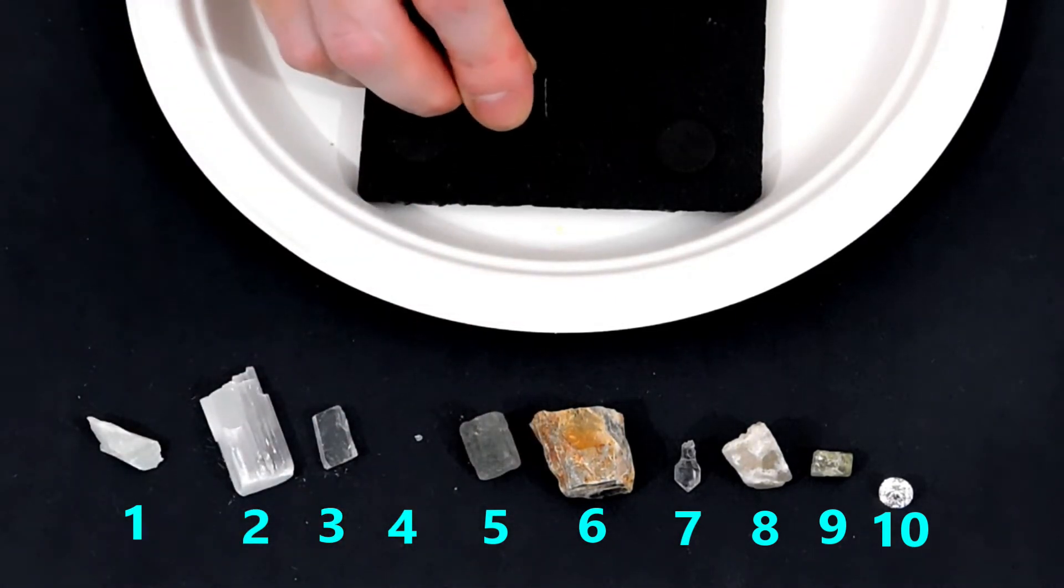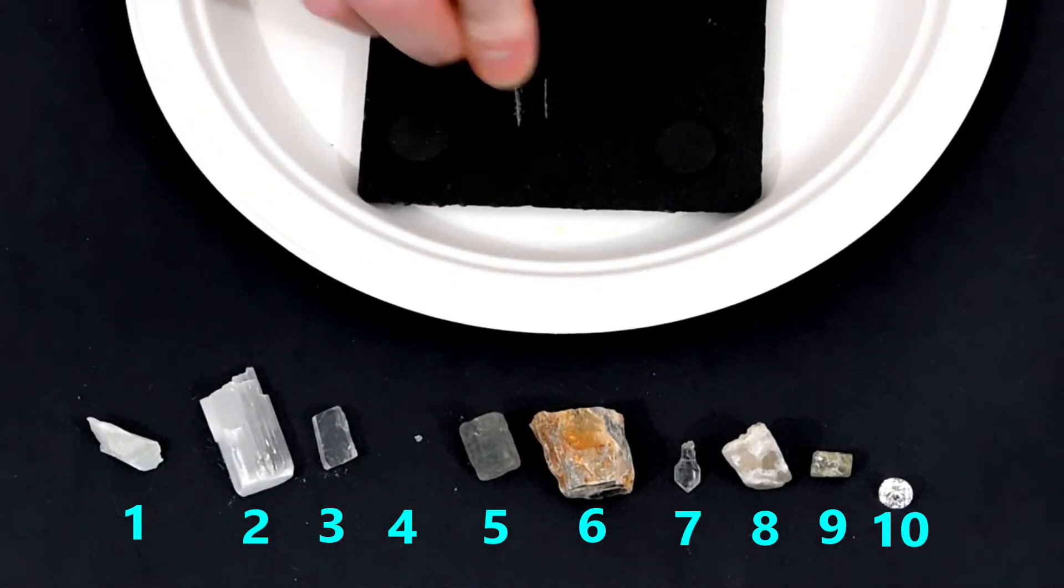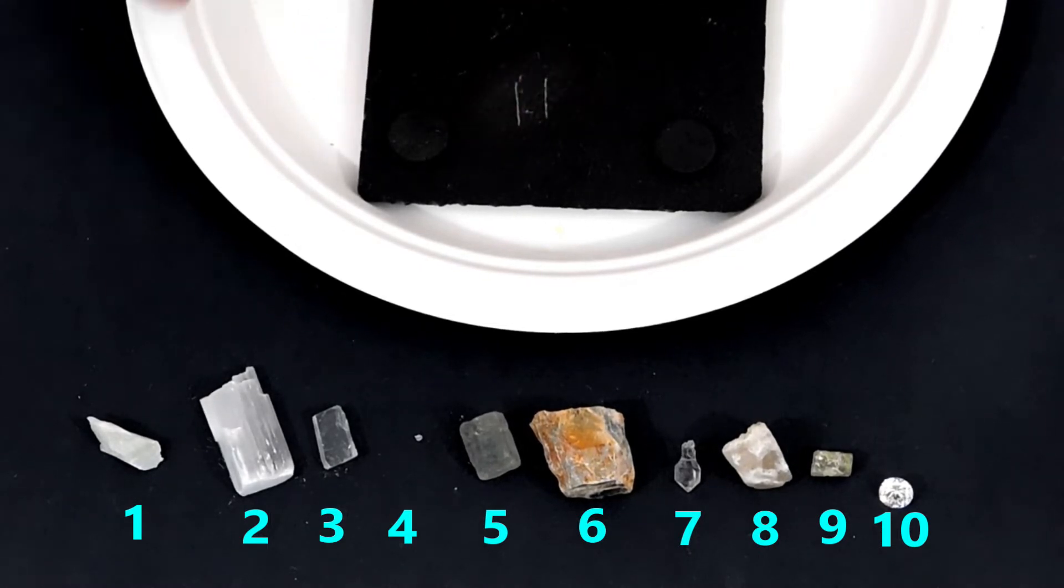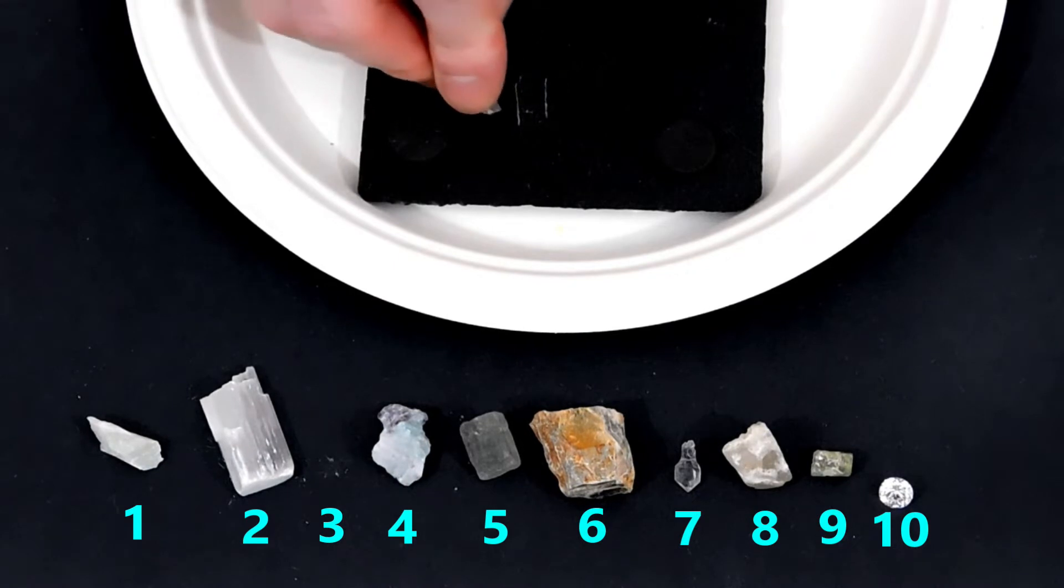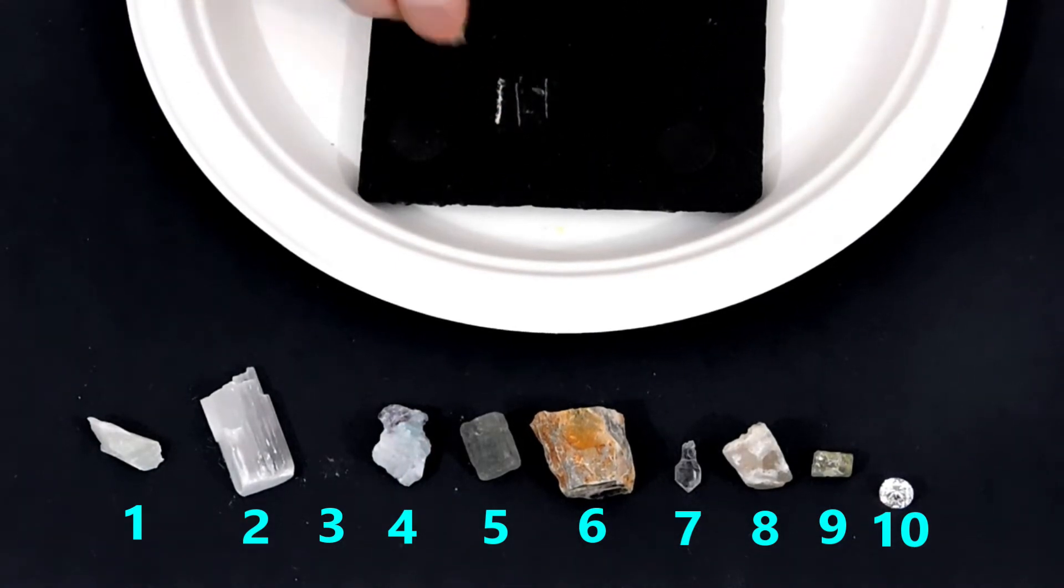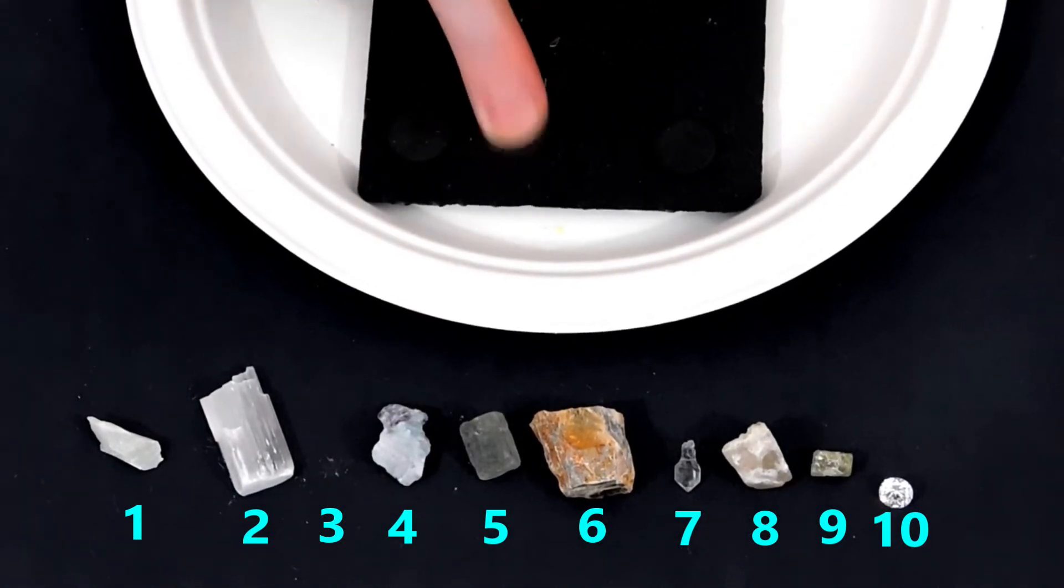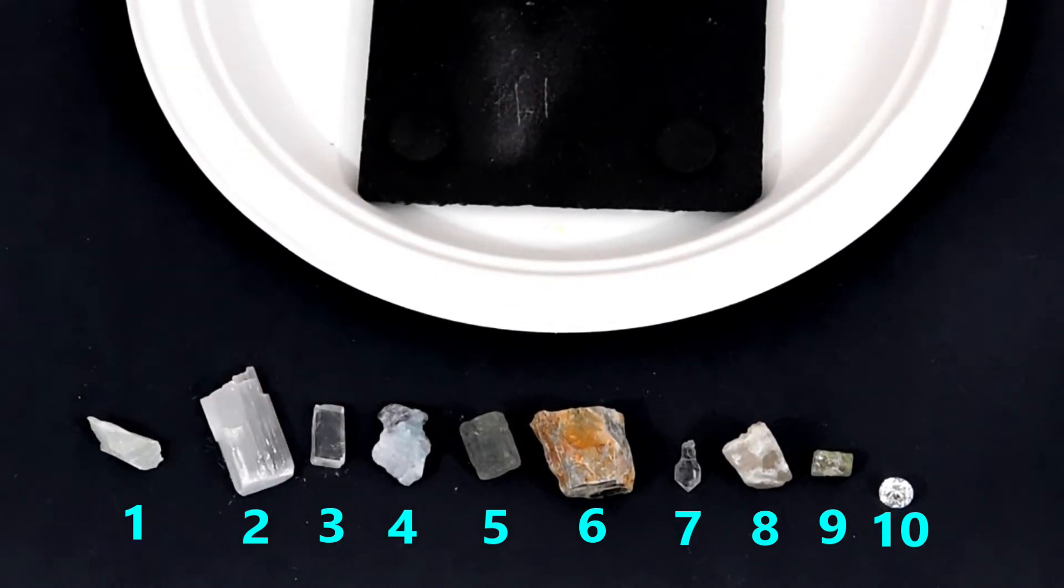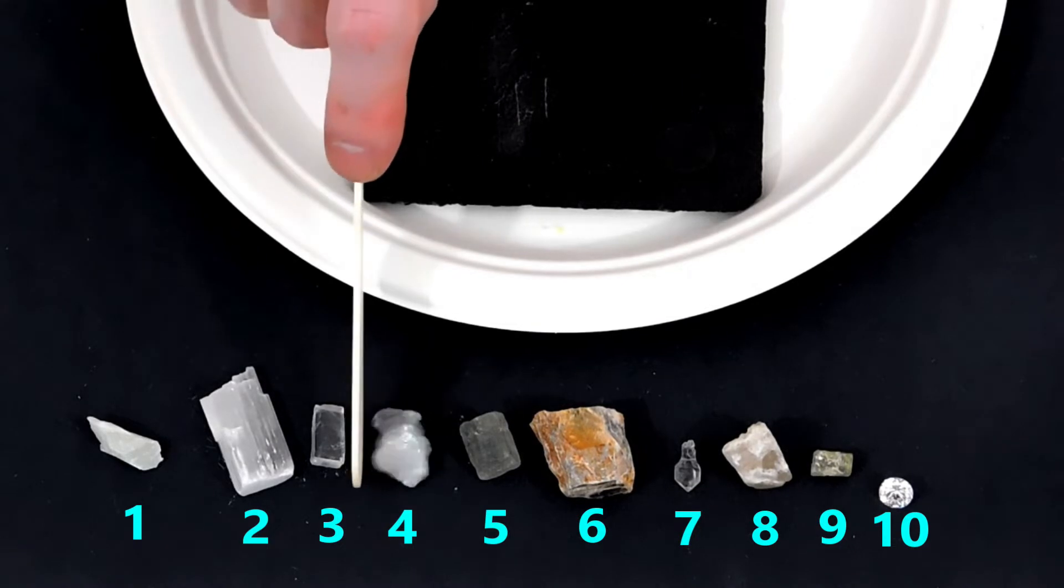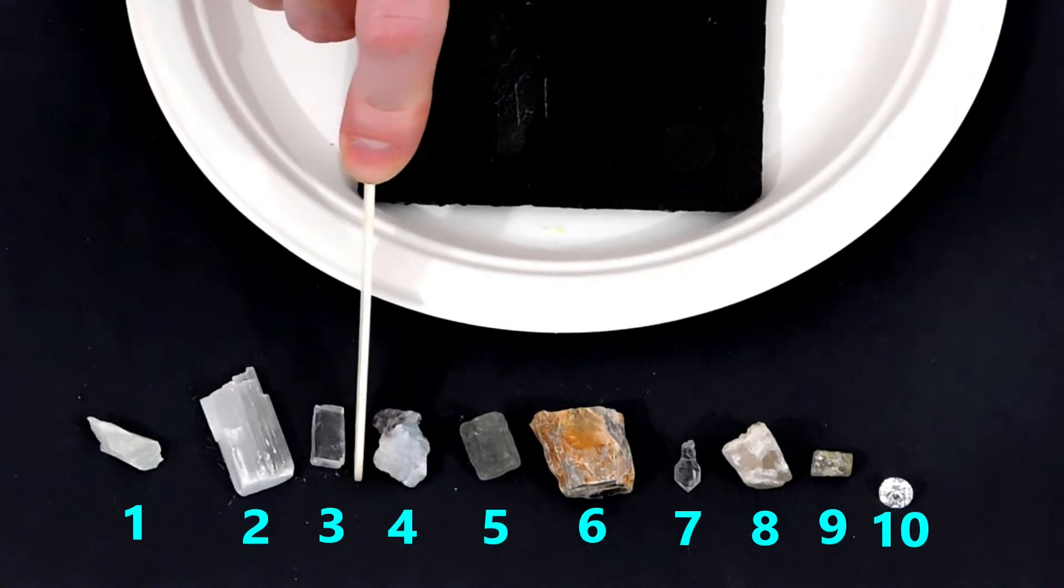Next, we try the fourth hardest mineral, which is fluorite. Likewise, fluorite also leaves a scratch so we know that fluorite is harder than the slate. Next, we try calcite. This time, we see a large white mark, but we can easily brush it away. So that mark was due to calcite crumbling. This means the slate is harder than calcite. So the Mohs hardness scale value for the slate is between 3 and 4.